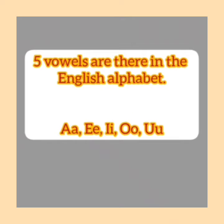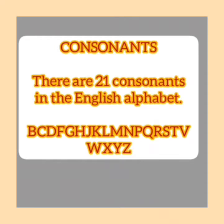There are 5 vowels in the English alphabet: A, E, I, O, U. And the other letters in the alphabet like B, C, D, F, G, etc. are called consonants.